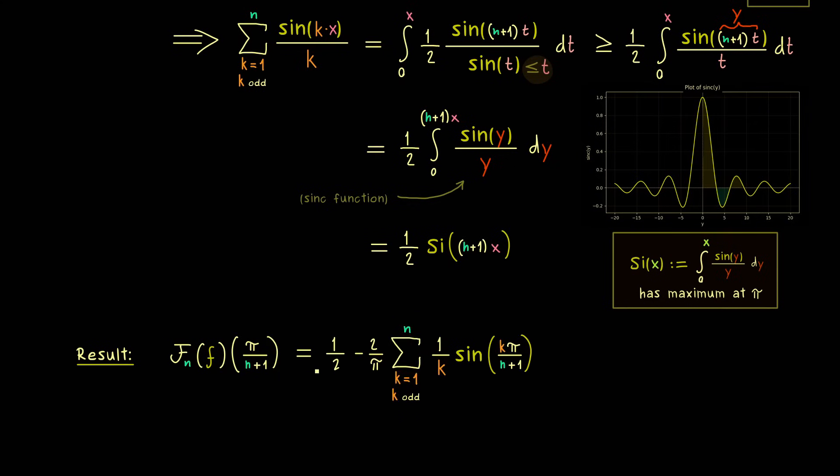And here we already know we have the constant one half minus this whole sum where the sine and the k is involved. And since we have the estimate for this sum in that direction, we get it in the other direction with the minus sign in front. So we can just write one half minus the constant times the sine integral at π. This means we have minus 1 over π times Si at π.